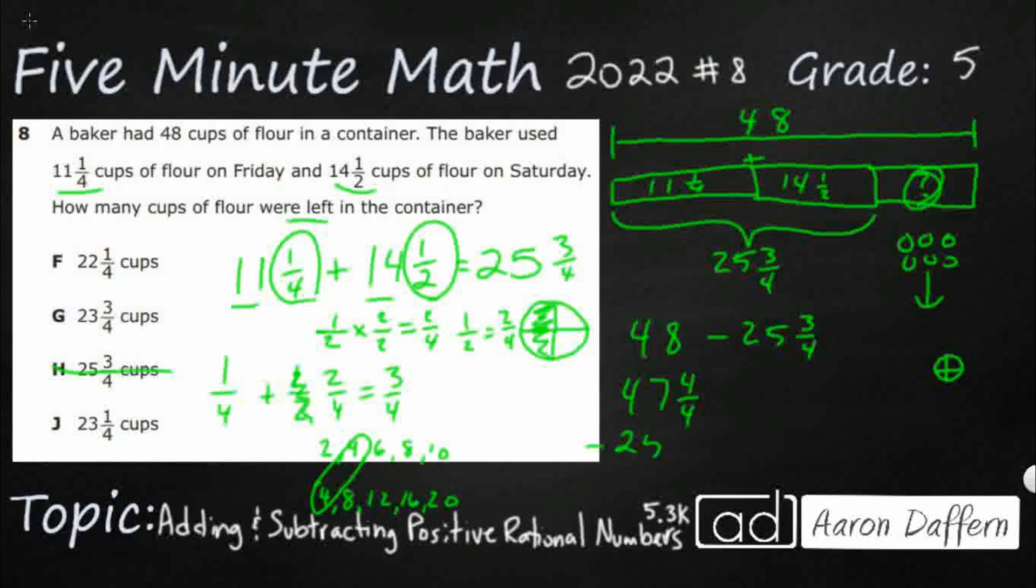Now I'll do it vertically so we can see why this is helpful here. But now look, I can subtract my fractions. 4/4 minus 3/4 is ¼. And then that's going to be 22. So this subtracts normally, but you have to make sure that you can subtract the fractions. And so I took one of my wholes and split it up into 4/4, which is another whole. My answer here is F.